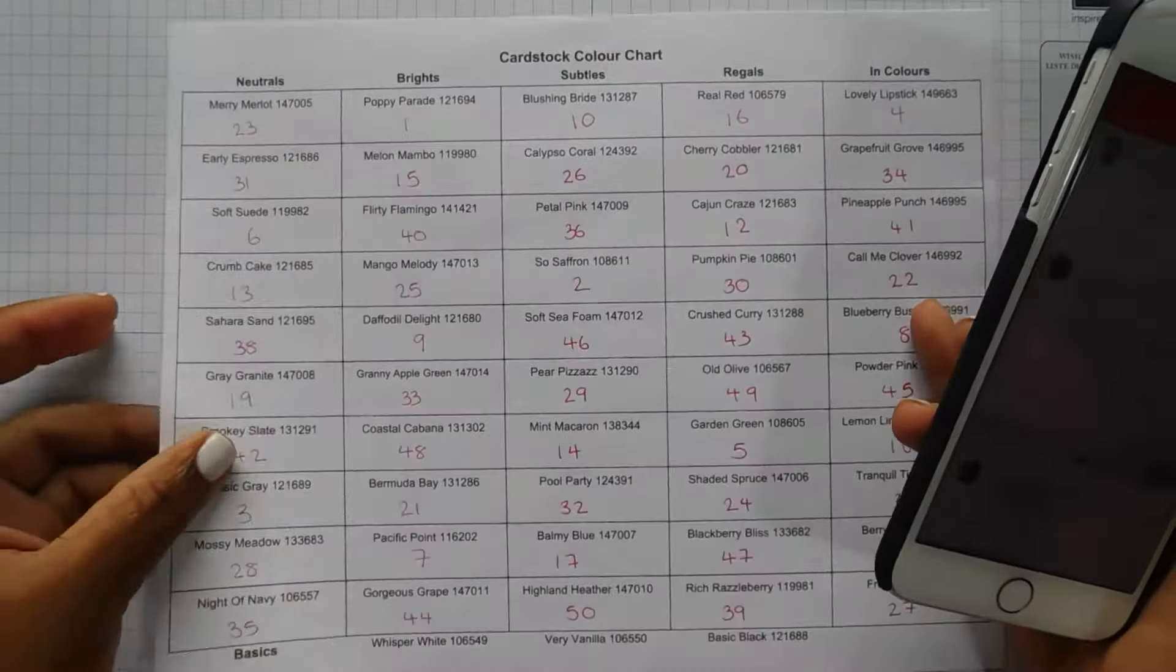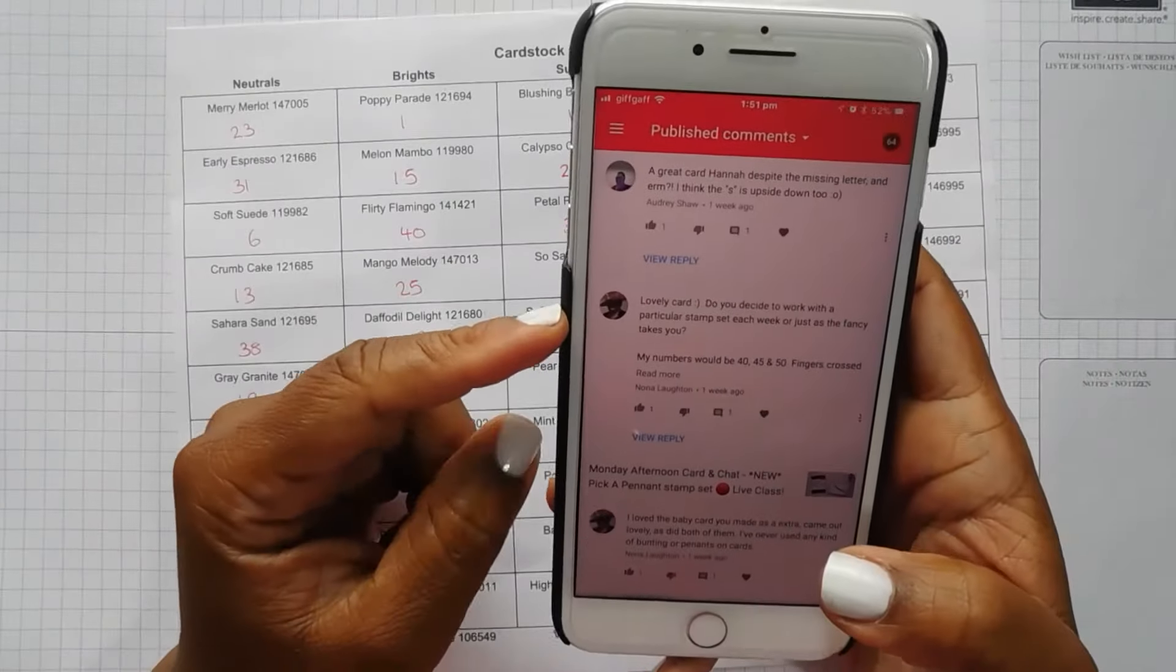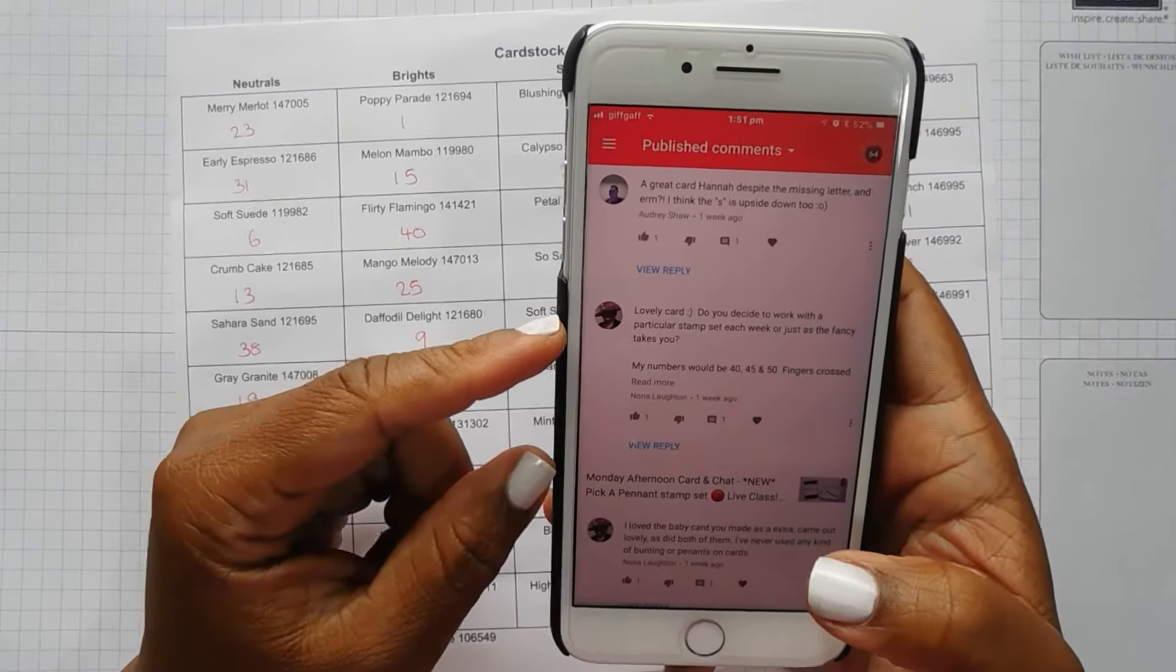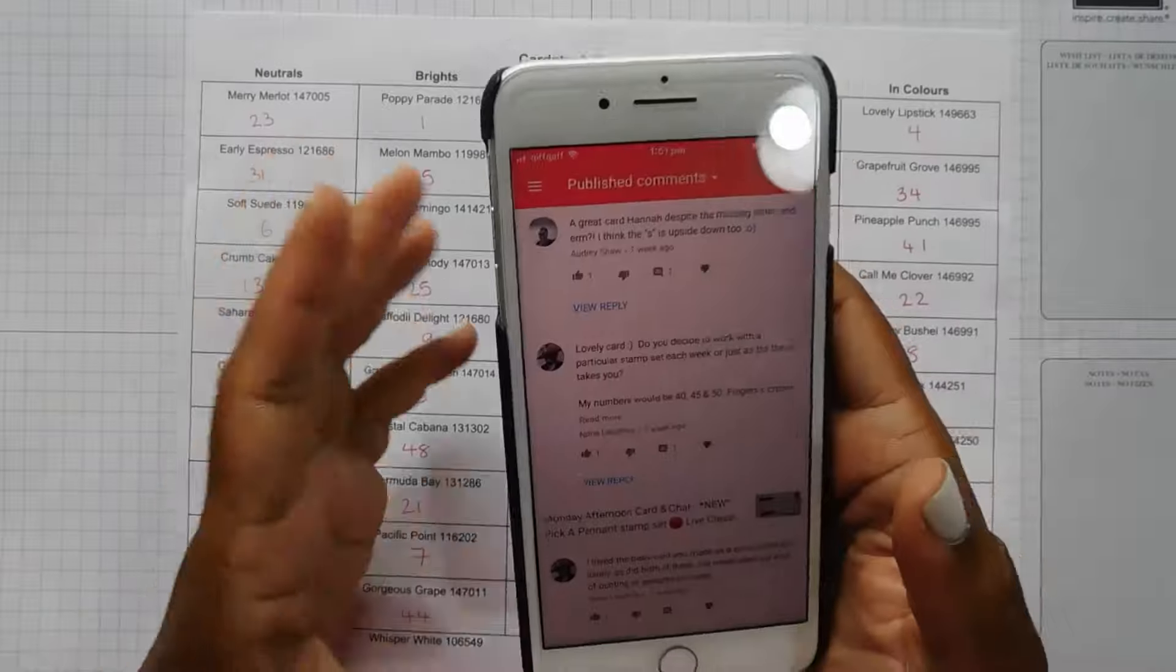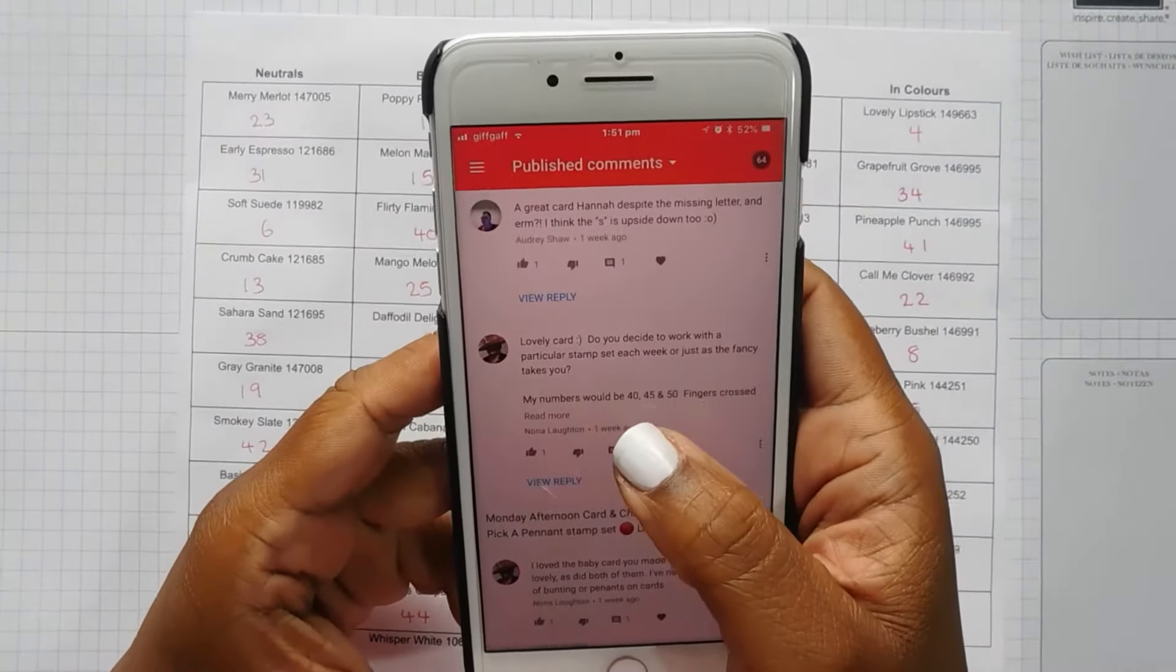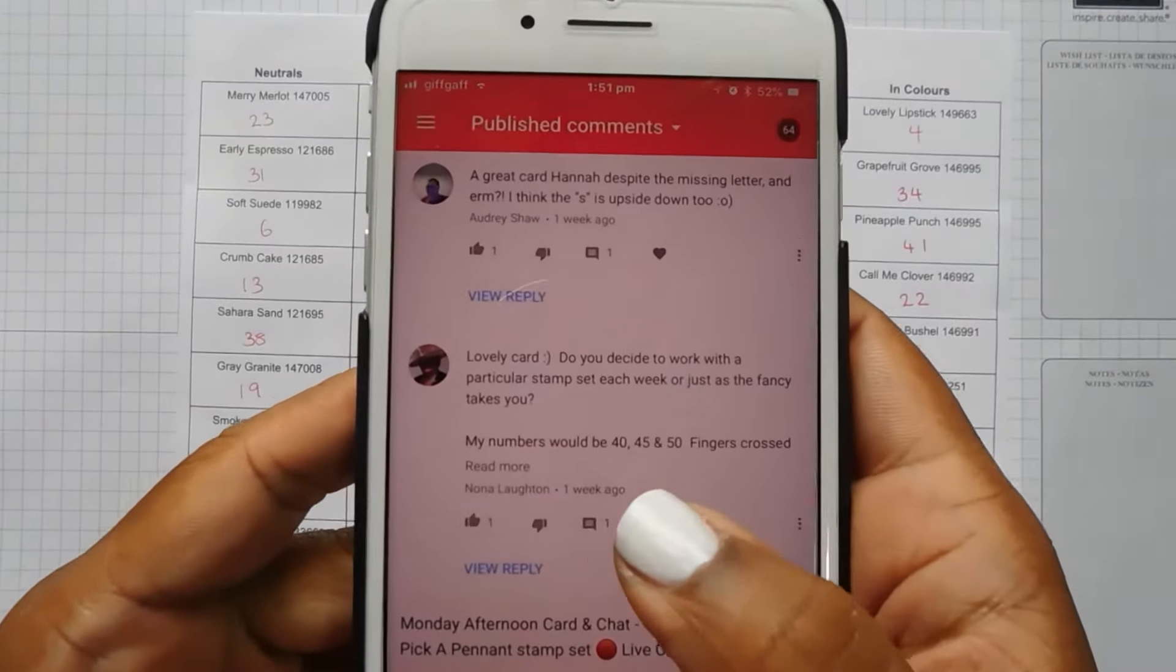So we're going to start by choosing our numbers. This week's numbers were chosen by Nona, one of my long time subscribers. And her numbers were 40, 45 and 50.